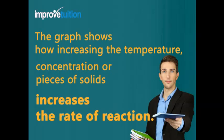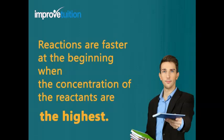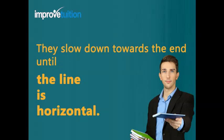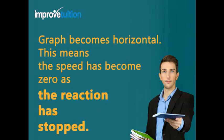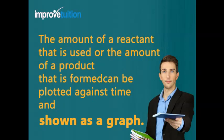The graph shows how increasing the temperature, concentration, or pieces of solids increases the rate of reaction. Lowering the temperature and concentration reduces the rate of reaction. Reactions are faster at the beginning when the concentration of the reactants is highest, and slow down towards the end until the line becomes horizontal, meaning the speed has become zero as the reaction has stopped. The amount of reactant used or the amount of product formed can be plotted against time and shown as a graph.